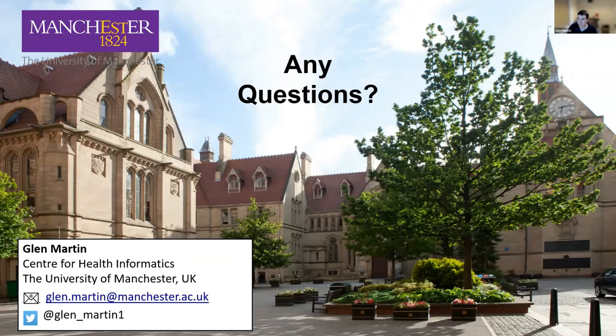Thanks very much Glenn — excellent overview. We have a question from Ken in the chat: can these methods be applied to genomic data where you might want to use multiple polygenic risk scores to predict multiple disease outcomes? And does the genetic data have any sort of additional considerations over the kind of observational health data you've been talking about?